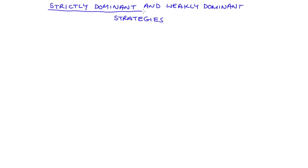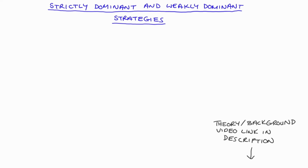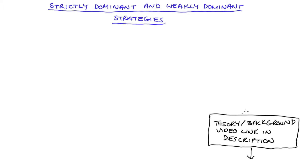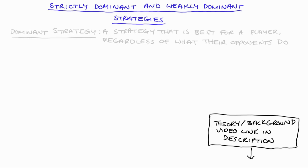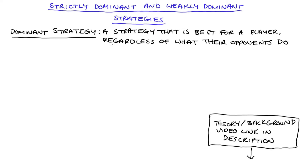In this video I'm going to talk about the difference between strictly dominant and weakly dominant strategies in game theory. I have a previous video about the theory and background — interpreting and solving game theoretic matrices like the ones I'll work with here; I'll link to that below. In that video I describe a dominant strategy as a strategy that is best for a player regardless of what their opponents do. This video is about helping you understand these concepts in more depth, because in even moderately complex accounts of game theory you will hear dominance discussed in terms of being weak or strict.